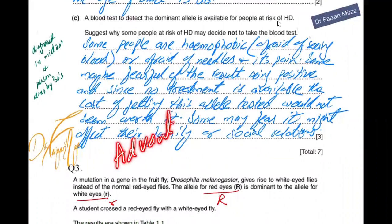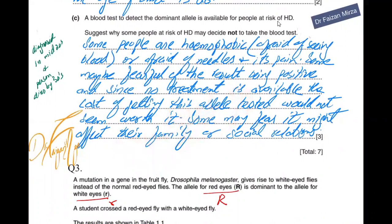What are the advantages of getting the allele tested? The advantages can be that the person can start to receive life-changing lifestyle adjustments. The couple can decide to have a child, or the person can decide to have their gametes altered using gene editing so that they can have a healthy child. Alternatively, they can decide not to have children altogether, because if the person carries the Huntington allele, being dominant, they will be passing the allele to offspring in the next generation.